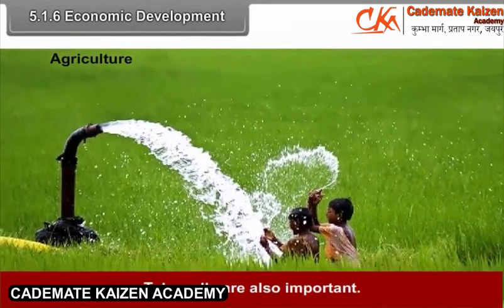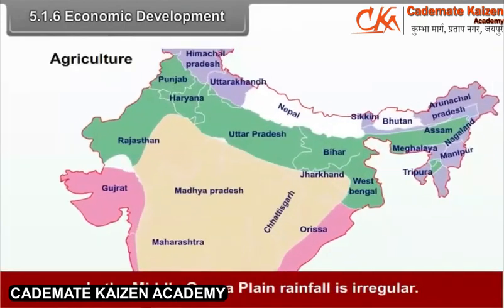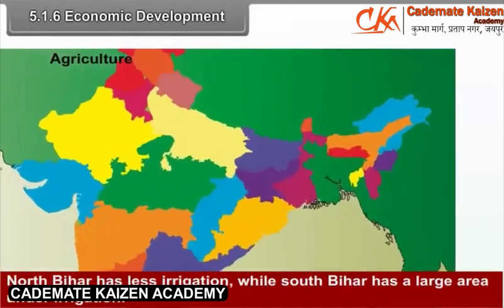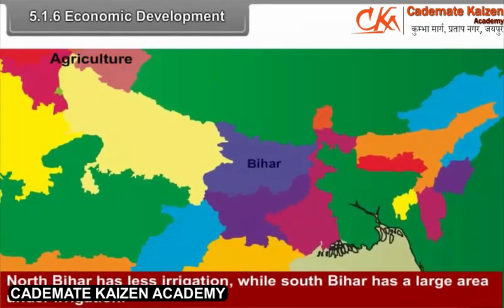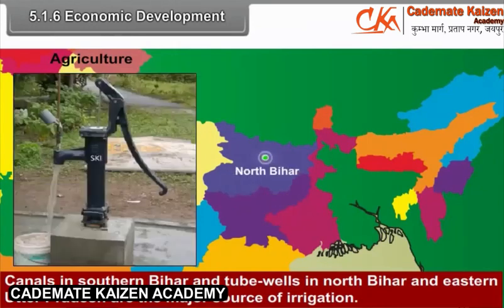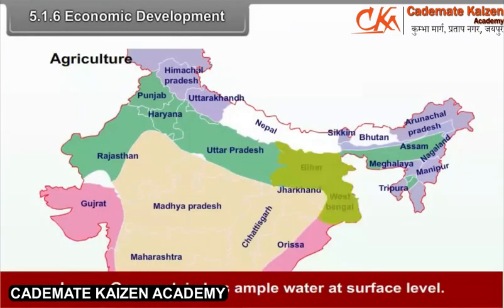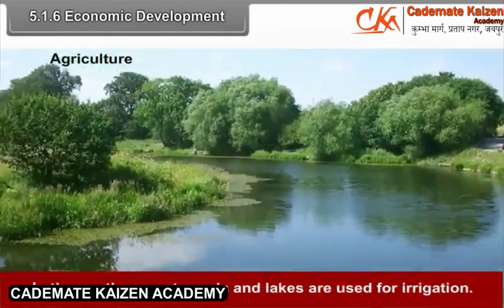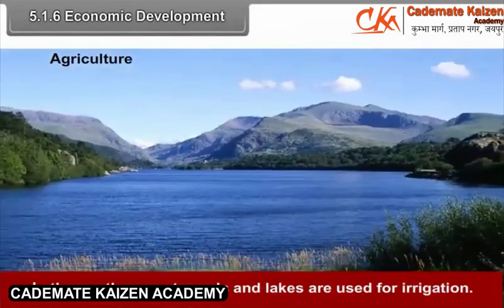Tube wells are also important. In the middle Ganga Plain, rainfall is irregular. North Bihar has less irrigation while South Bihar has a large area under irrigation. Canals in southern Bihar and tube wells in north Bihar and eastern Uttar Pradesh are major sources of irrigation. The lower Ganga Plain has ample water at surface level. In the southern part, ponds and lakes are used for irrigation.